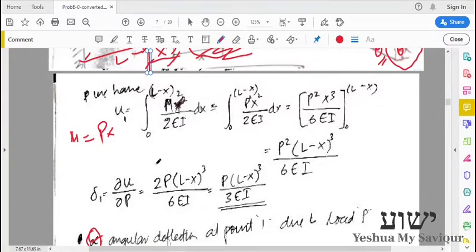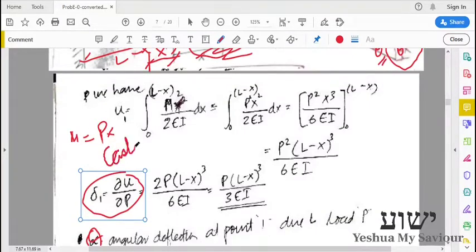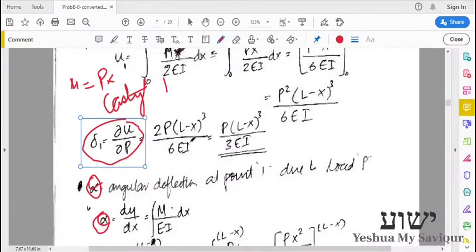So deflection at point 1 can be found out by just differentiating the strain energy with respect to the load, which is Castigliano's first theorem. First theorem, we will get the deflection.